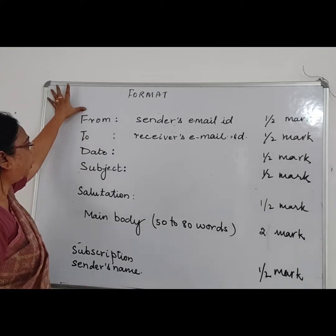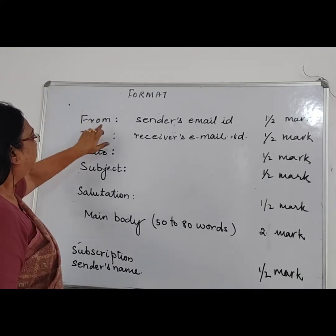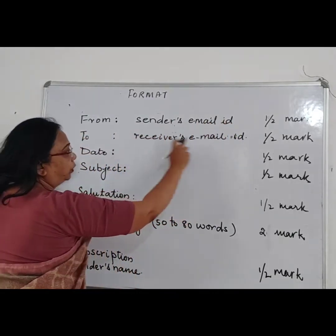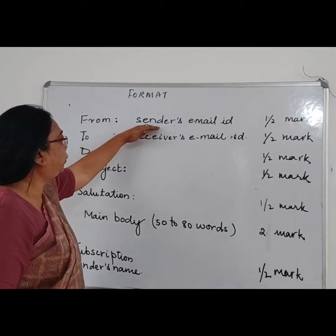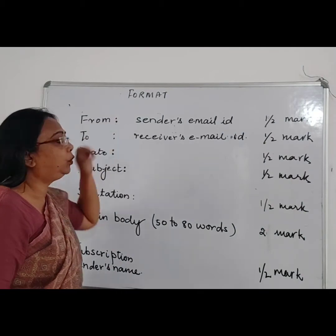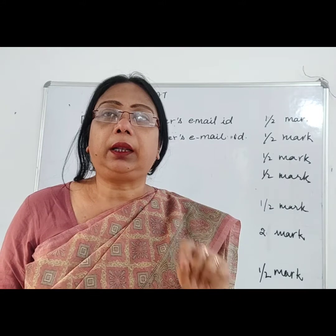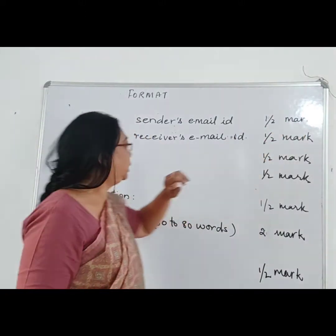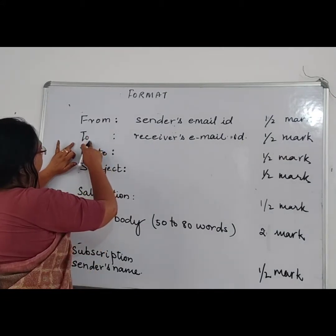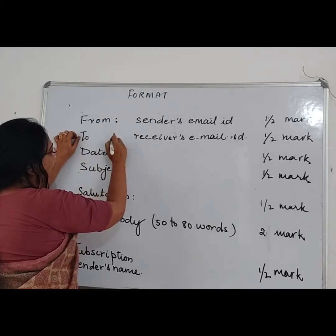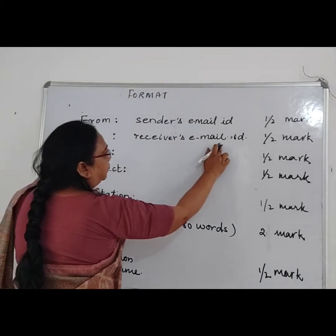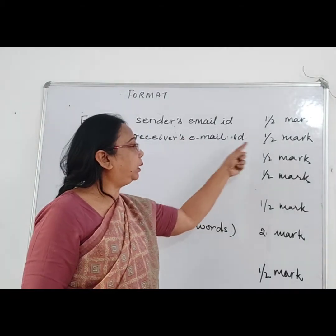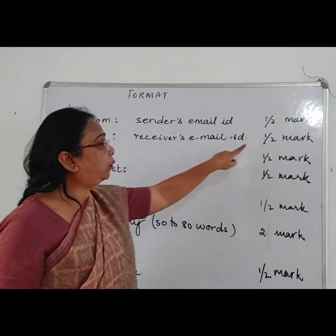First, you will leave one or two lines. Then you will write 'From,' make two dots — which is called a colon — and write the sender's email ID, which is of half marks. Remember, when you are writing your email ID or 'From' or these dots, do not make any error, as one red pen mark means you miss that half mark. Second, after 'From,' just beneath it, make two colons and write the receiver's email ID. The receiver is the person to whom you have sent the email. That is also of half marks.